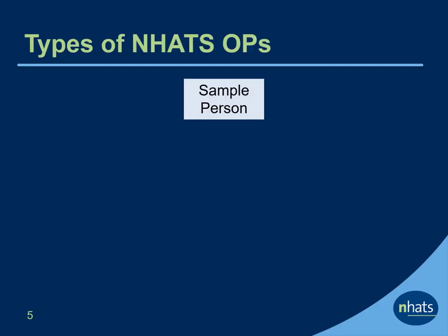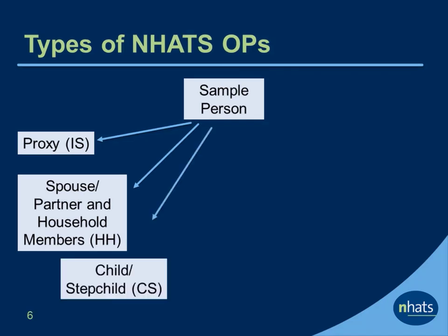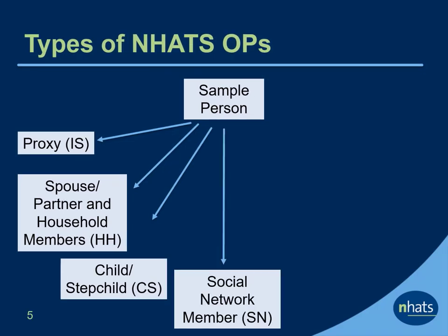Here are some examples of NHATS OPs along with the two-letter interview section during which the OP is identified. A proxy, for example, is identified in the IS or Interview Setup section. A spouse or partner and household members are identified in the household section, and children including stepchildren are identified in the CS section. Up to five social network members, defined as people the SP talks to about important things, are identified.